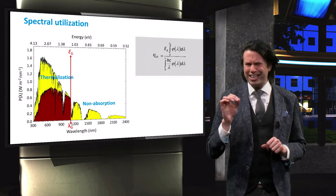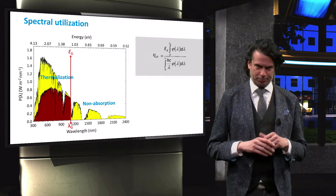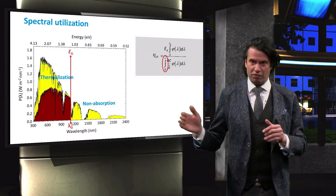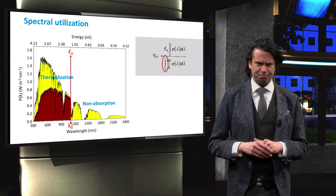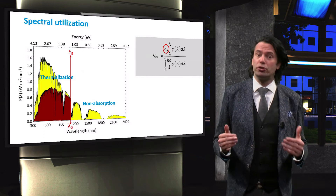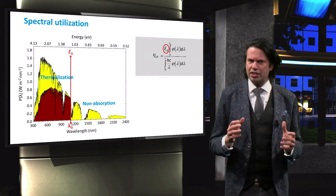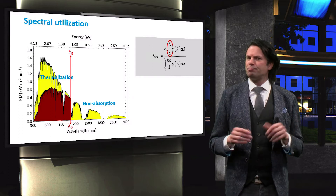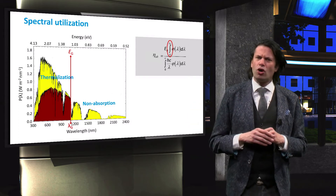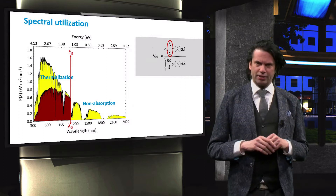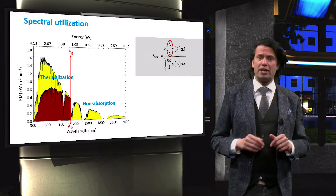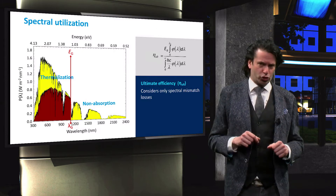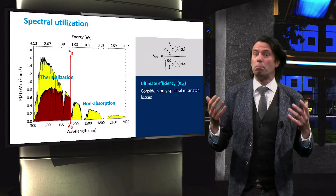The spectral utilization of a single junction solar cell is described by this equation. In the denominator, the product of photon energy and photon flux is integrated over all wavelengths, effectively representing all available energy. In the numerator, the photon flux is multiplied by the bandgap energy to consider that energy above the bandgap is lost due to thermalization. Moreover, the product of the photon flux and photon energy is only integrated up to the bandgap wavelength, taking into account that photons with an energy below the bandgap are not absorbed. This fraction is also known as the ultimate efficiency of a single junction solar cell, as it only considers the spectral mismatch of the cell.